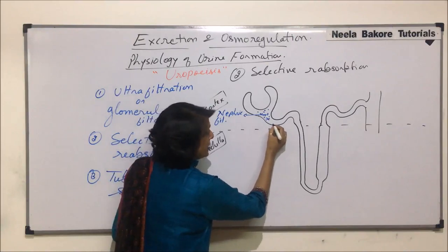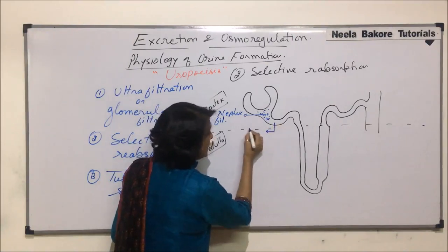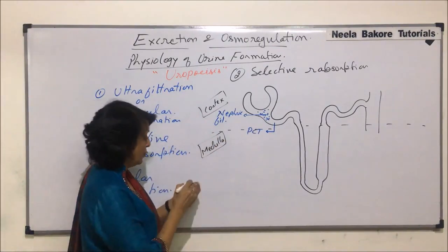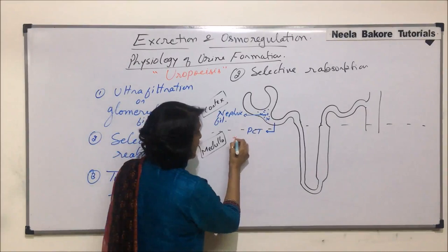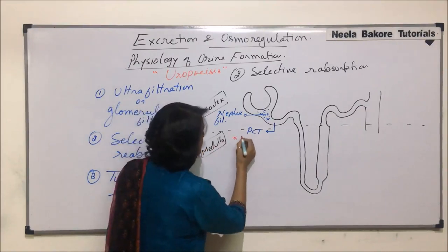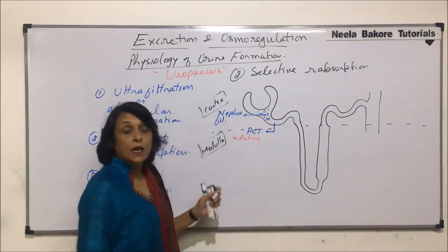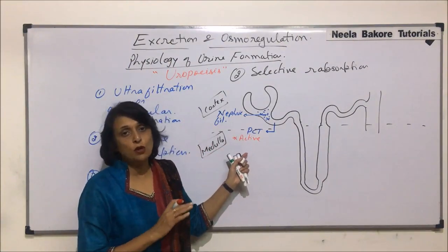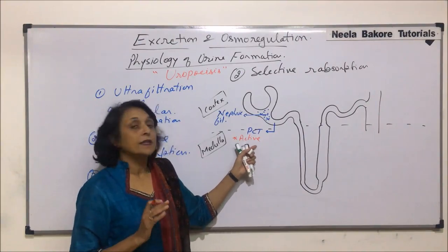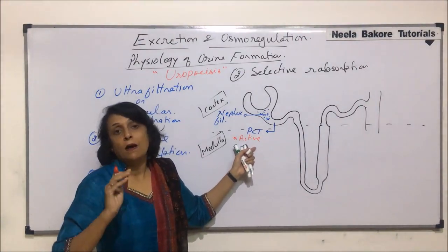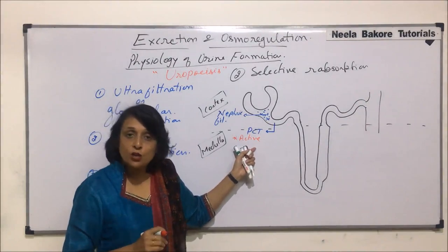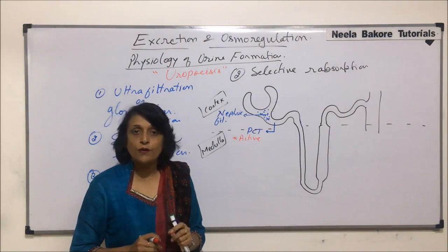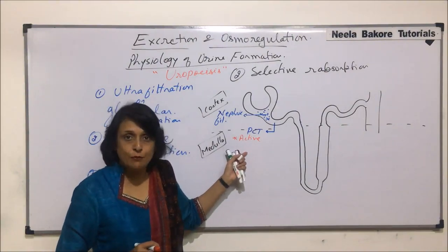When the filtrate comes into the PCT — proximal convoluted tubule — most of the absorption which takes place is active. For active absorption, it has certain adaptations we discussed earlier. The cells of PCT have microvilli, meaning they have brush-bordered epithelium, and the cells have a high number of mitochondria to help in active absorption.